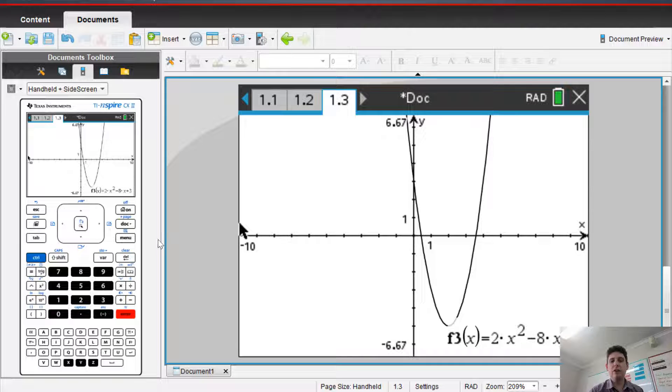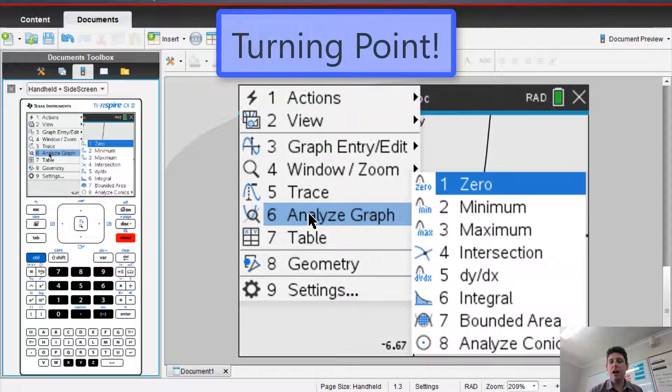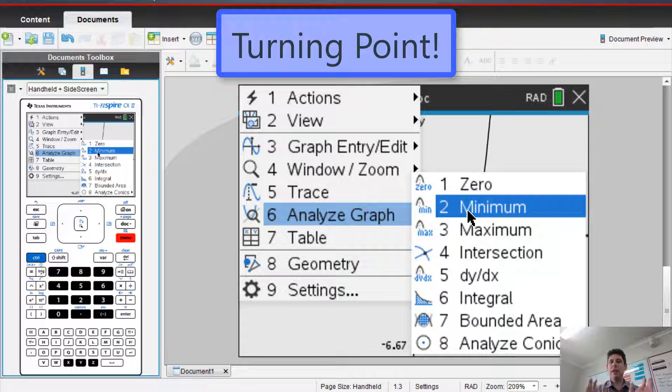So let's first do our turning point. Menu. Analyze graph. It's a minimum turning point. It's at the bottom of the smiley face. A minimum.